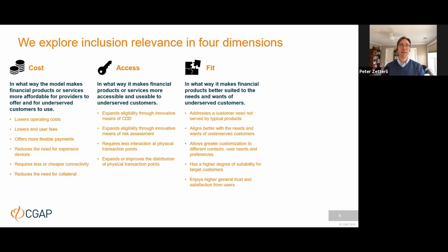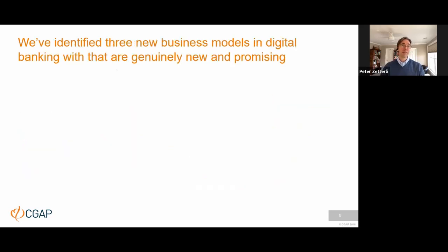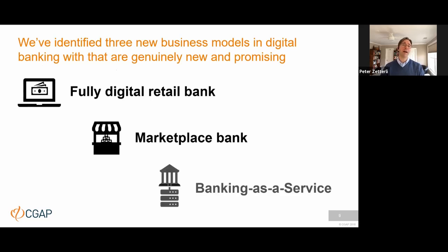Before diving into the models themselves, I want to say a few words about how we think about inclusion in this context. When we look at business model innovation, we analyze their inclusion potential along four main dimensions. The first is cost — to what extent does the business model make it cheaper to offer services and for customers to access financial services in terms of money or time. The second dimension is access — whether physical access, digital access, or eligibility for products. The third is product fit — to what extent can a wide range of customers see their diverse needs met, including personalization and customization. The fourth metric is experience — how simple are the products, how transparent, and do they give the client more control and empowerment. We have identified three business models that are genuinely new and potentially impactful: the fully digital retail bank, the marketplace bank, and banking as a service.